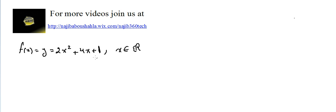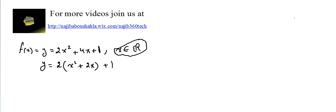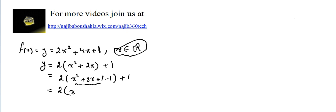Why does f have no inverse? We need to find another function g with the same rule but a different domain. Let's see why f has no inverse. Starting with y = 2(x² + 2x) + 1, we complete the square: take the coefficient of x, which is 2, divide by 2 to get 1, square it, then add and subtract 1 inside. This gives y = 2(x + 1)² minus 2 plus 1, so y = 2(x + 1)² − 1.